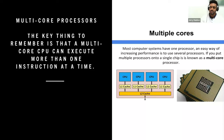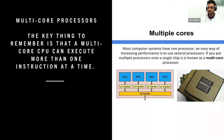In addition to multiple cores, some CPUs also support multi-threading. Multi-threading allows a single core within a CPU to execute two instructions at the same time. Multi-threading can also increase system performance, especially when implemented within a multi-core CPU. For example, if you have a CPU with four cores and each core supports multi-threading, that CPU can run eight instructions concurrently.